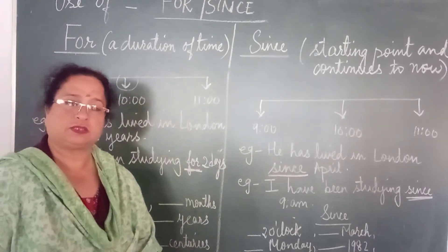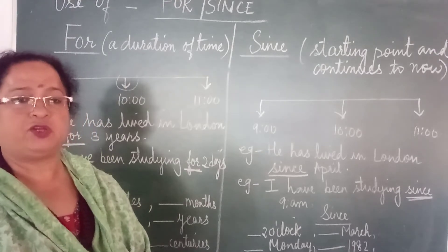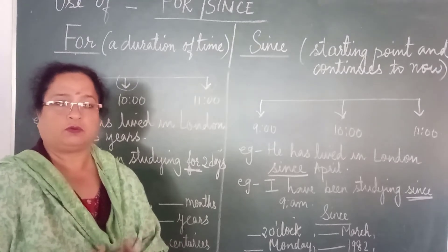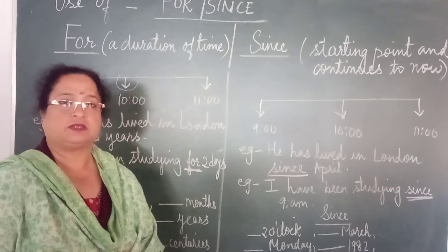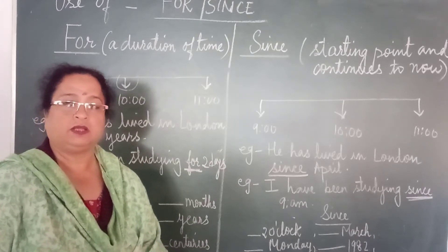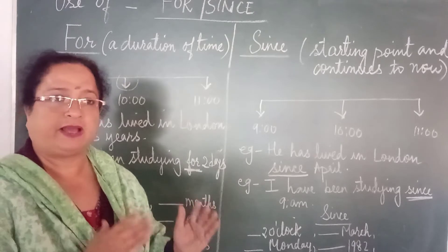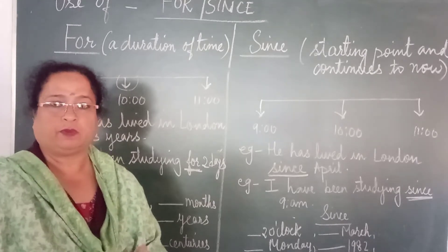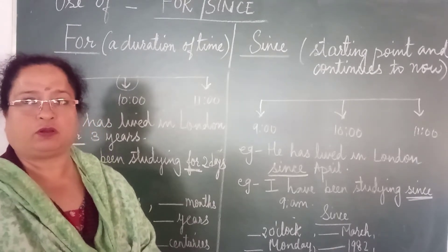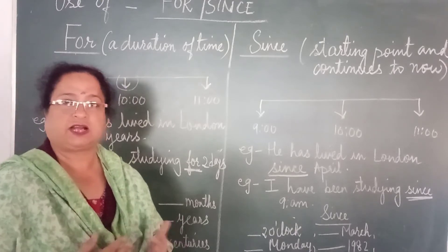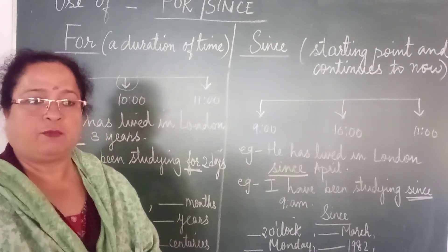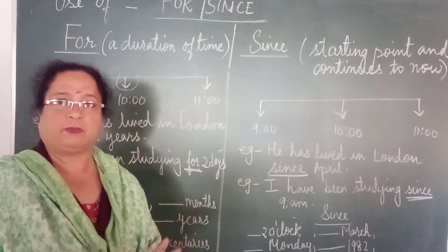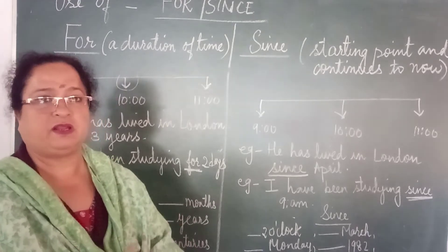Now where do we use 'since'? 'Since' is used when we mention the starting point of a period of time and it continues till the present. For example, 'I have been a doctor since 1992.' The starting time was 1992 and that has continued till 2021. 'She has been playing with him since she was born' — she started playing from the time she was small. 'My father has lived in Patna since the beginning of March' — that means in March he started living and has been living till now.